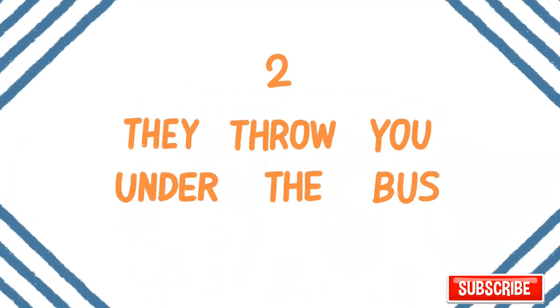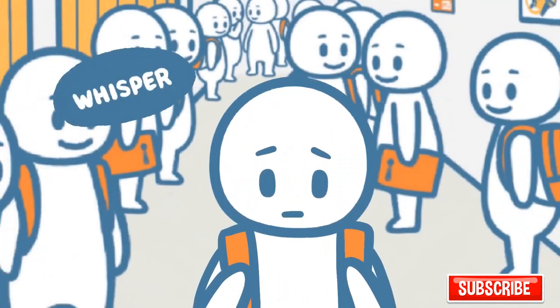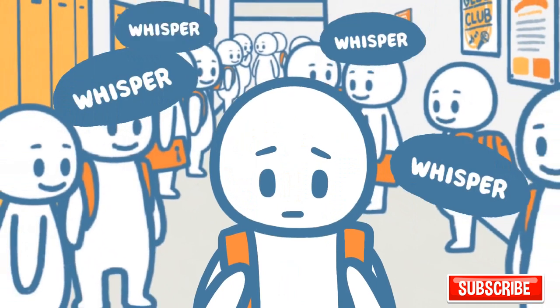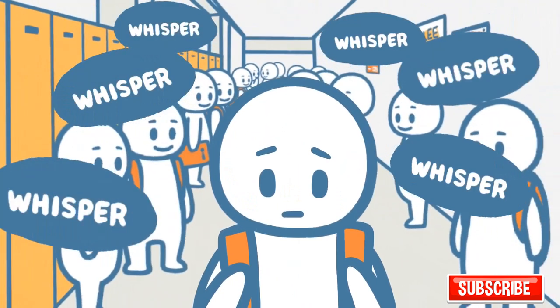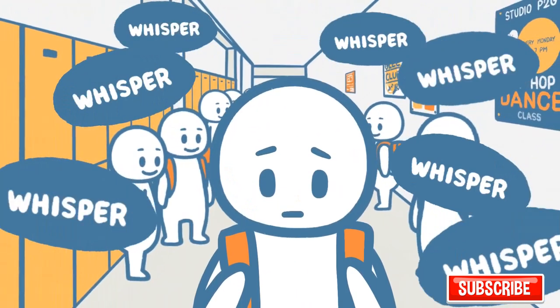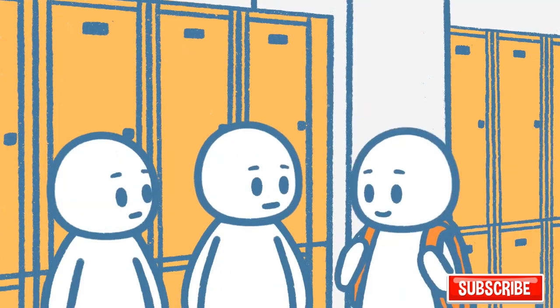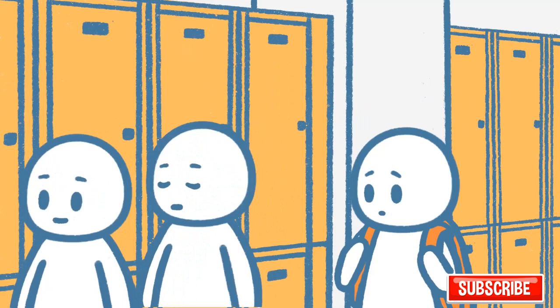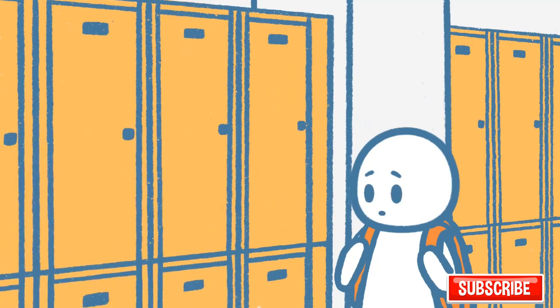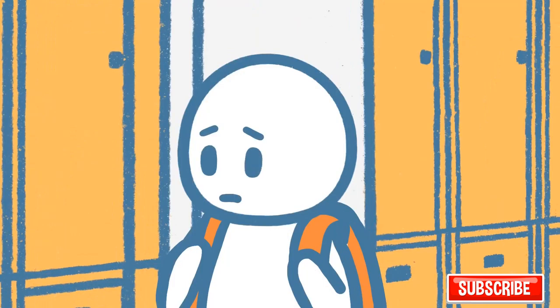They throw you under the bus. When the going gets tough, fake friends are willing to just throw you under the bus and pin the blame on you if it means saving their own skin. They don't vouch for you, they don't take your side, and they certainly don't stick up for you when someone is hurting or belittling you. The truth is, they don't think you or your friendship is worth putting themselves at risk for.